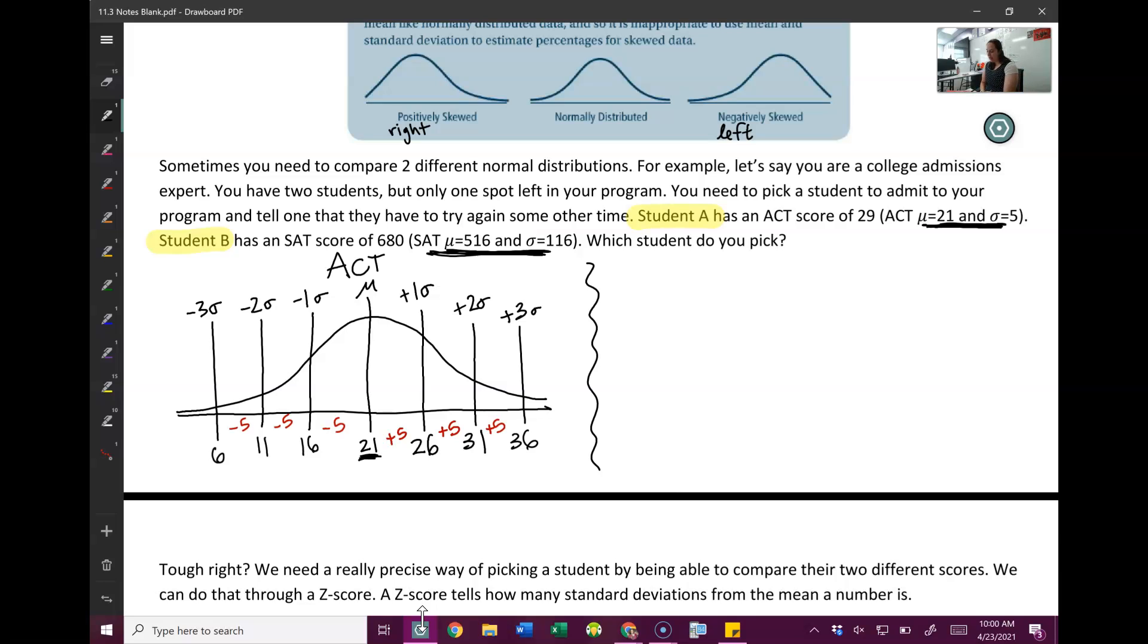So let's look at where student A is. Let's say student A is the green one. So student A has a score of 29. So if I estimate that's probably like there-ish. So about halfway between one and two standard deviations, that's where they're at.